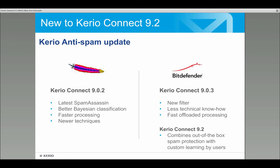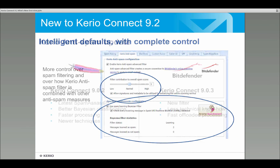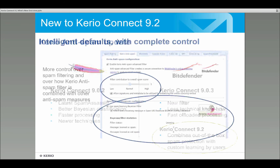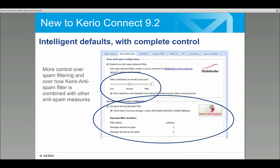What we've done now is allow both spam filtering approaches to be used together. When 9.03 was first introduced, partners had to choose between Bayesian classification or just using the Bitdefender extension. Now they can use both together, combining the ease of use of the extension with the custom learning that Bayesian classification provides. This also enables the spam and not-spam buttons that end users can use to help classify and control spam.